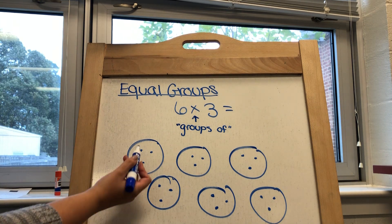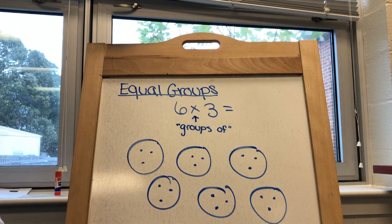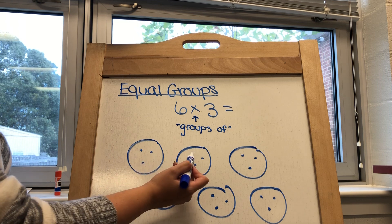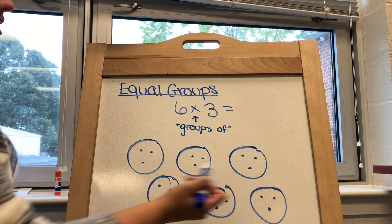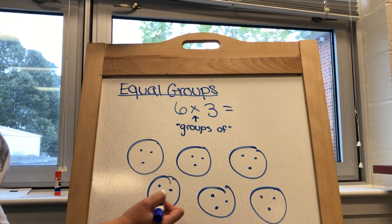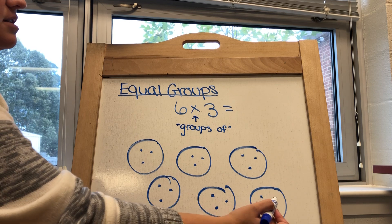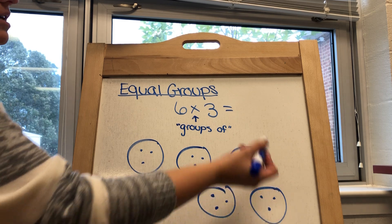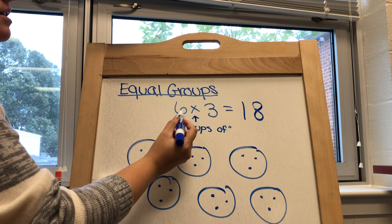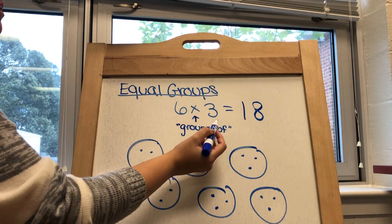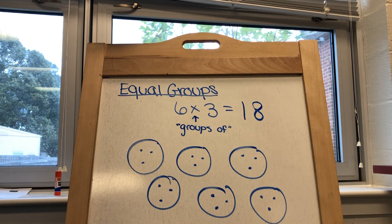From here, all I have to do is count all the dots that I have: one, two, three, four, five, six, seven, eight, nine, ten, eleven, twelve, thirteen, fourteen, fifteen, sixteen, seventeen, eighteen. So six groups of three equals eighteen total.